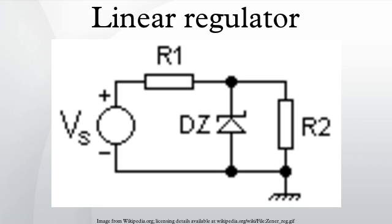In fact, the power lost due to heating in the transistor is the current multiplied by the voltage difference between input and output voltage. The same function can often be performed much more efficiently by a switched-mode power supply, but a linear regulator may be preferred for light loads or where the desired output voltage approaches the source voltage. In these cases, the linear regulator may dissipate less power than a switcher.